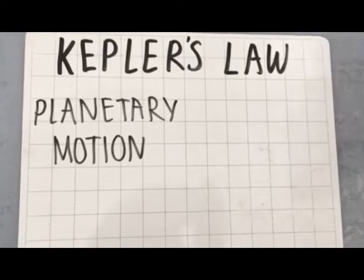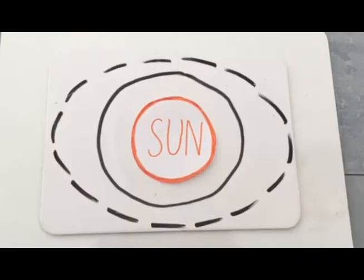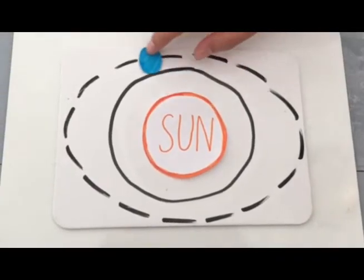Kepler's law of planetary motion describes the motion of planets around the Sun. Planetary orbits are not exactly circular, but rather elliptical.